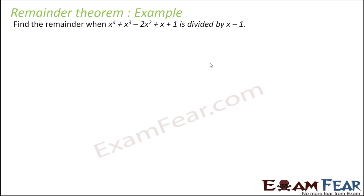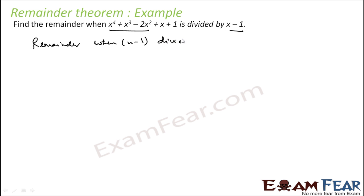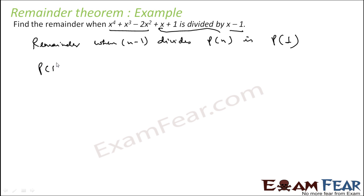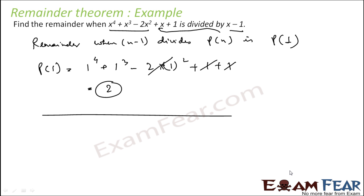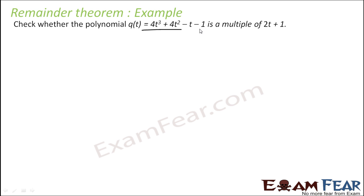So: p(x) be any polynomial of degree ≥ 1, and a be any real number. If p(x) is divided by a linear polynomial x - a, the remainder is always p(a). Let's take an example: find the remainder when this expression is divided by x - 1. As per the remainder theorem, remainder = p(1) = 1⁴ + 1³ - 2(1²) + 1 + 1 = 2. The remainder is 2.